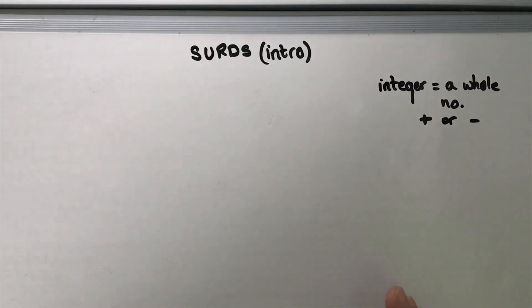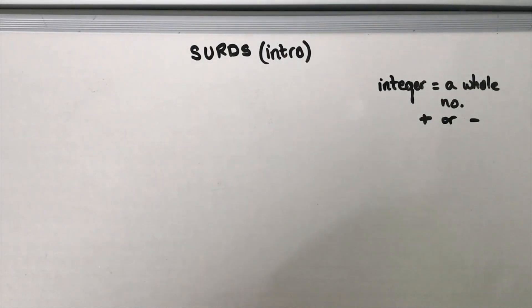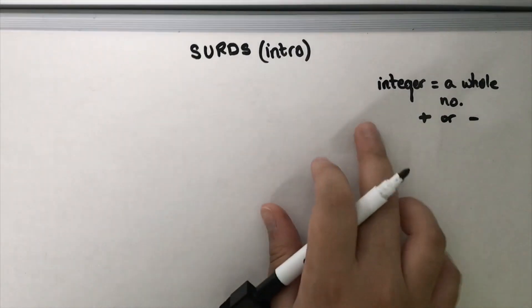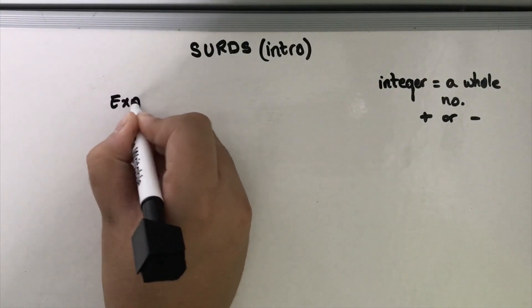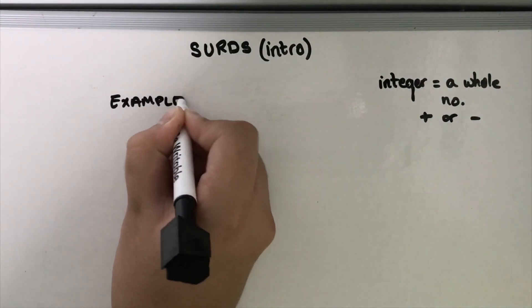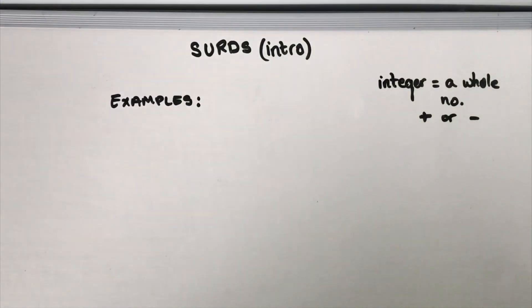So like I said before, a surd is a root number that can't be simplified into an integer. So let's look at a few examples of what they are. Now I'm going to show you a list and some of them are surds, some of them aren't.